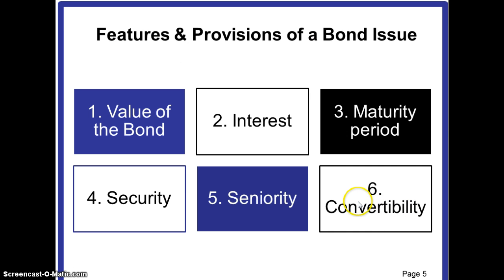The next important feature is convertibility. A bond may come with a conversion feature whereby the bond holder or investor is given the right to exchange their bonds for common stock at the end of a specified period and at a predetermined price. That feature is known as convertibility, and such a bond is known as a convertible bond.